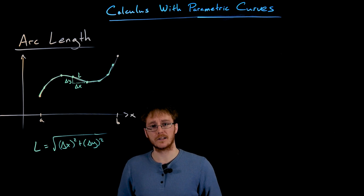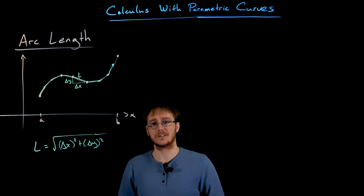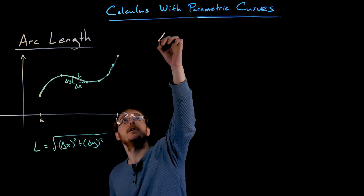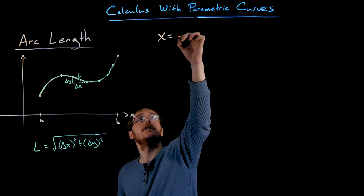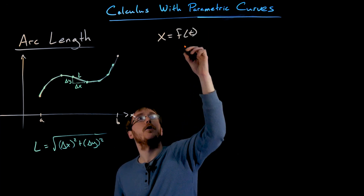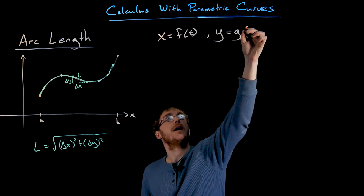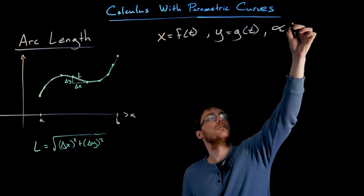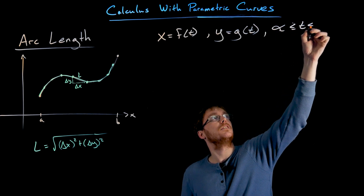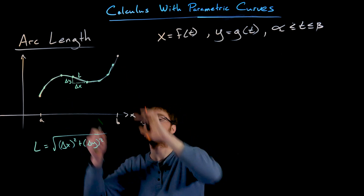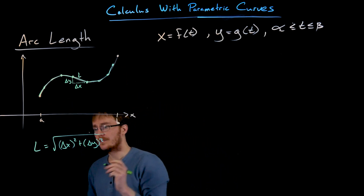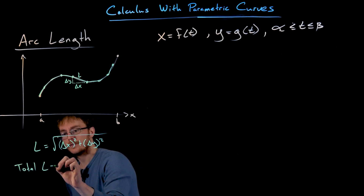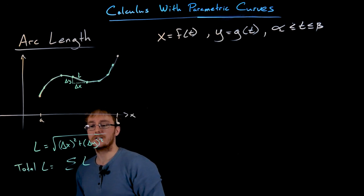Because what we know about our curve is its parametrization: X is equal to some function of our parameter called F, and Y is given by some other function G. There'll be some interval of parameter values — T from alpha to beta — to get the segment of the curve we want. The total length of the curve is found by taking the sum of all these smaller lengths.